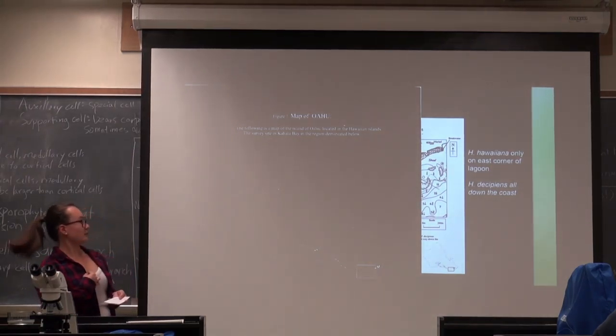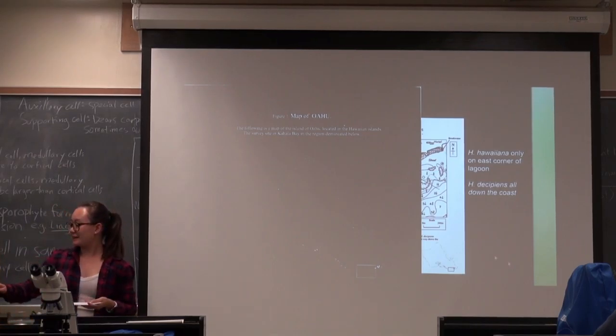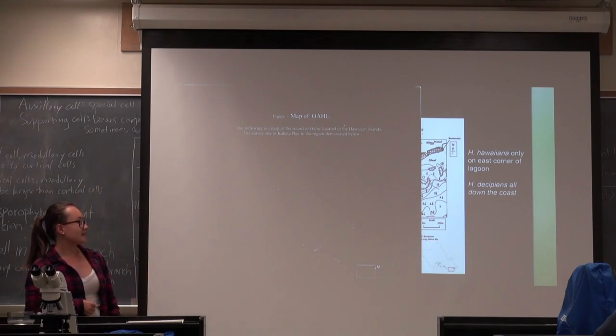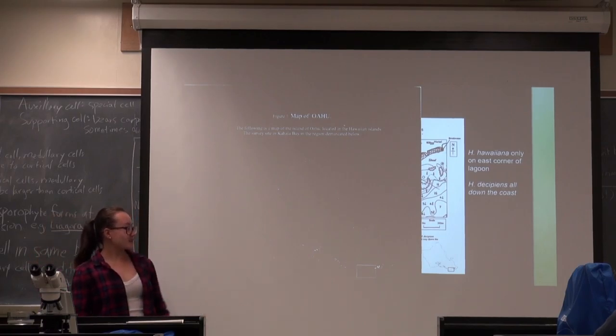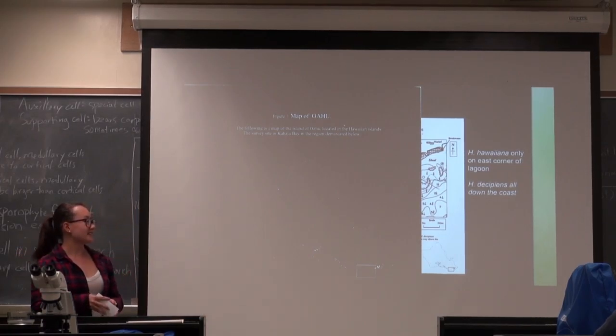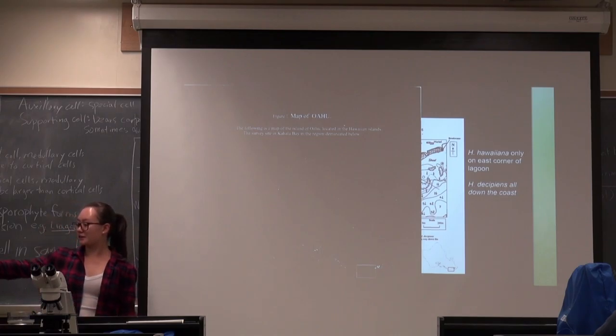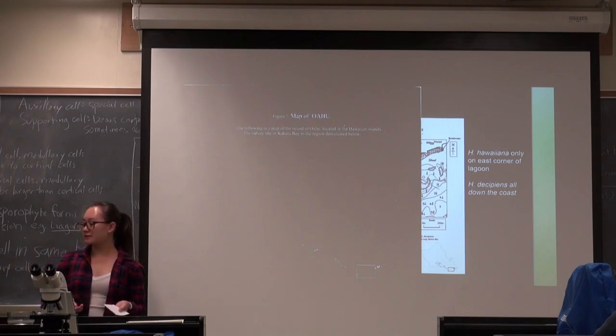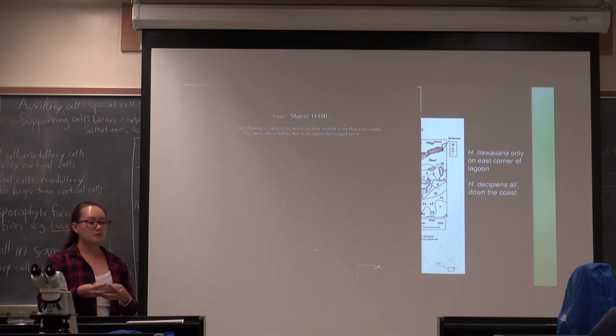I don't know why that happened. That didn't look like that earlier. I guess you can't really see it, but this is a box right there, that's the Kohala area where they did the study. I'm really sorry that it's blocking the other one, but that's basically just a map of the Kohala area where they were surveying the two species. Basically what they found was that Halophila hawaiiana was only found in the east corner of the lagoon, and then the whole rest of the lagoon was filled with the invasive species.